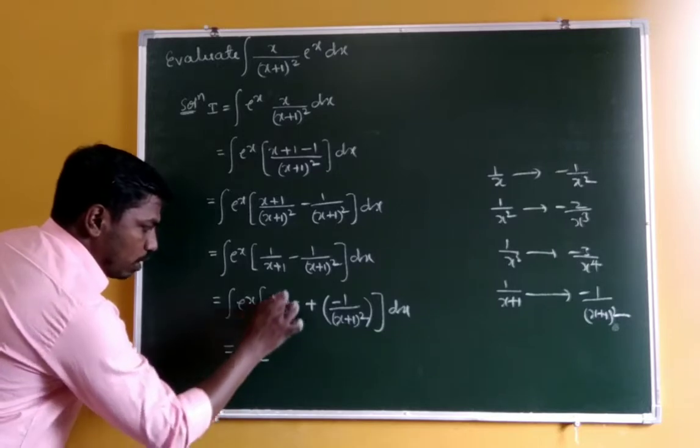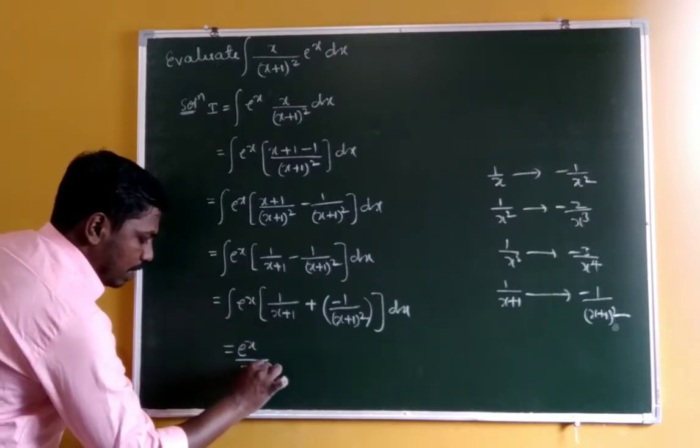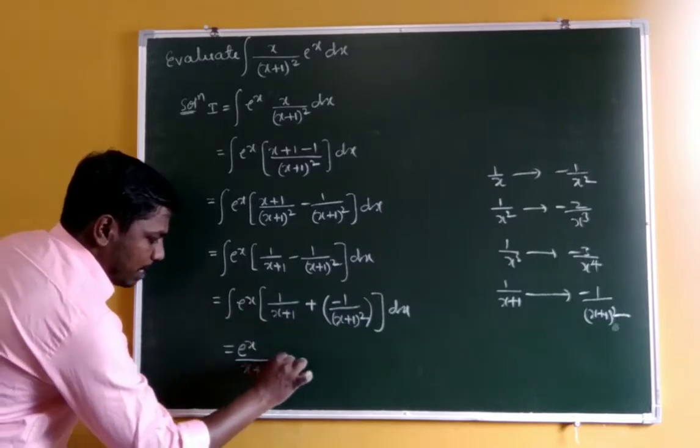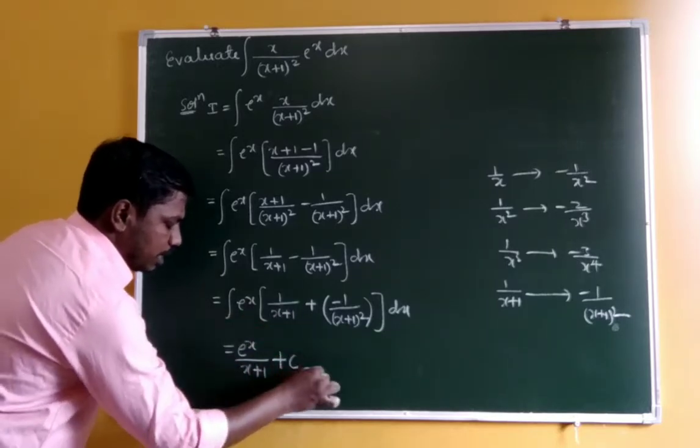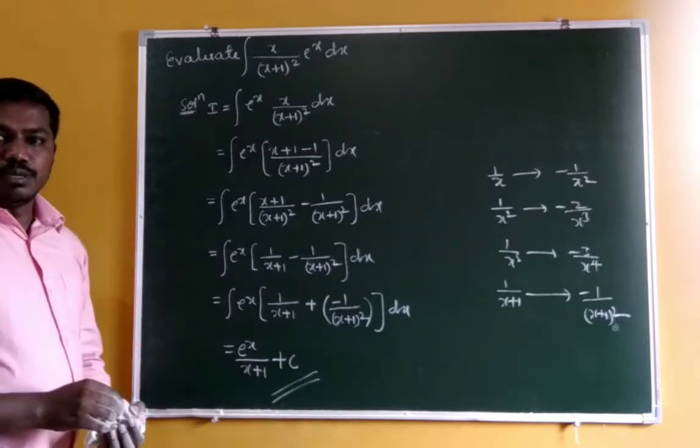Integration is in the form ∫eˣ[f(x) + f'(x)]dx. Applying the formula, the answer is eˣ · f(x) = eˣ · [1/(x+1)] plus integration constant.